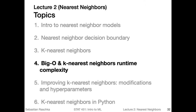Depending on how we implement the k-nearest neighbor algorithm, it may require that we hold all the data points in memory. If we have a large dataset — say, millions of images — then this can be quite a limiting factor. But right now, let's focus more on runtime complexity: how fast KNN is in the prediction step.